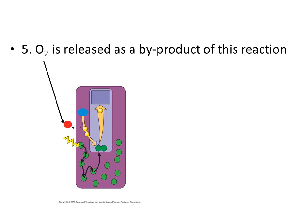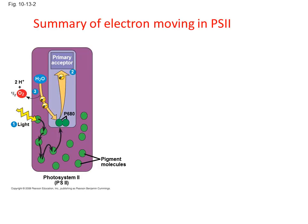Step five: now that we have split water and utilized the hydrogen or electrons from the hydrogen, the byproduct — the waste — is oxygen. The plant doesn't need the oxygen, so it releases the oxygen through the stomata. In summary: sunlight activates this process, electrons move until they get to P680, electrons leave P680 and go to the primary electron acceptor, and water is split so electrons from water replenish the missing electron for P680.